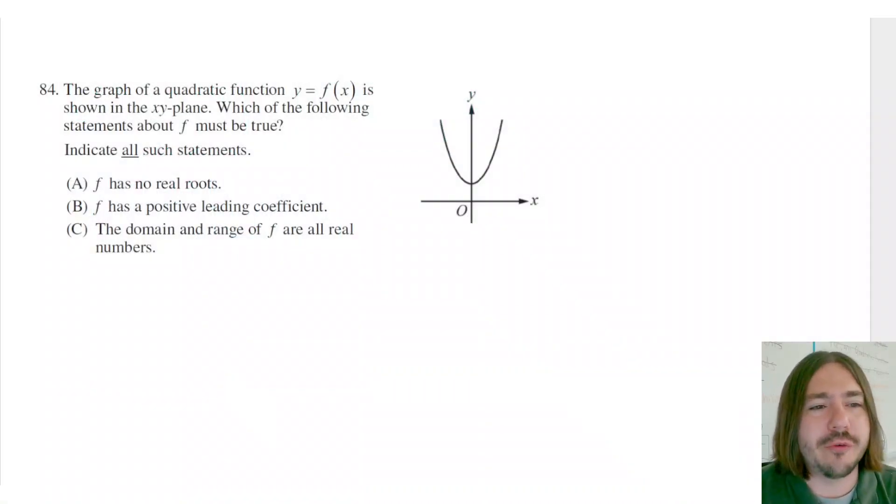Hey y'all, welcome back. Number 84 says the graph of a quadratic function, Y equals F of X, is shown in the XY plane. You can see that here. Which of the following statements about F must be true? Indicate all such statements. So there may be more than one right answer here.